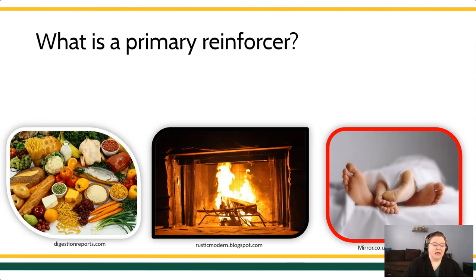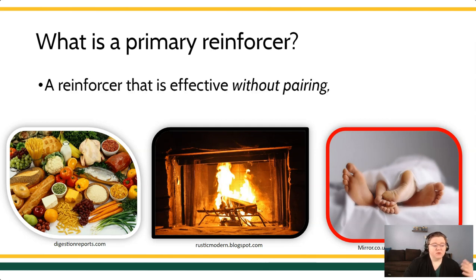Primary reinforcers tend to be tied into their evolutionary values. For instance, food, access to warmth, or even contact with a sexual partner — all of these could be primary reinforcers. These are tied to that evolutionary value, and we're kind of programmed biologically to seek these out. A primary reinforcer is effective without pairing; you don't need any particular learning history for this to be effective. We have this biological predisposition to seek out these stimuli, just as we have the biological predisposition to avoid or escape aversive stimuli like pain.